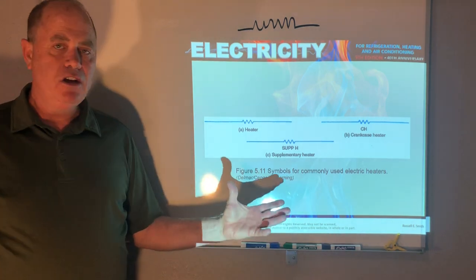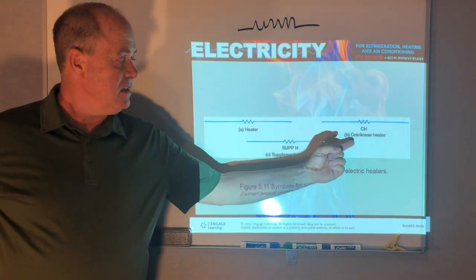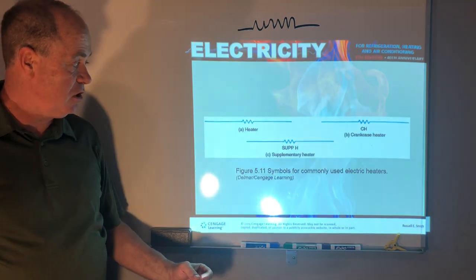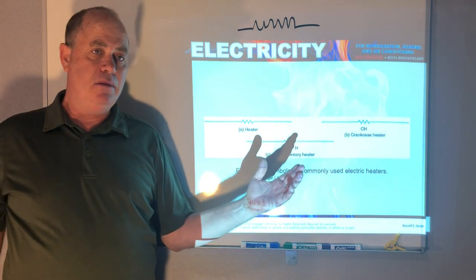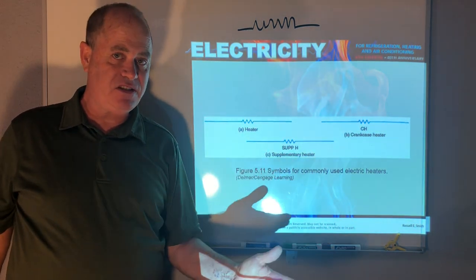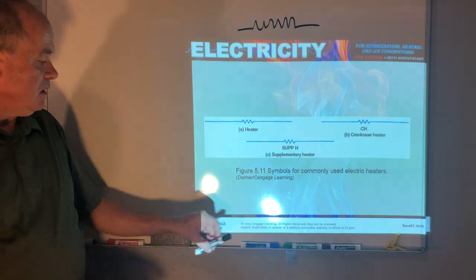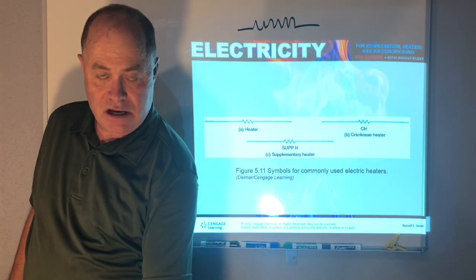And then we just change the words. We might just say CH or CCH for crankcase heater, something like that, or DFH for defrost heater. And that's the symbol for a heater.